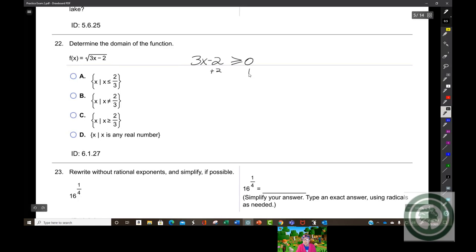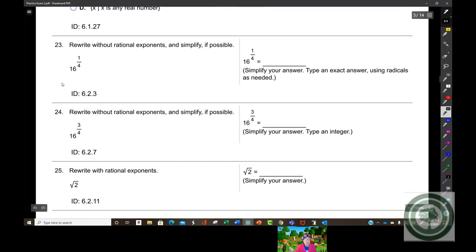Plus 2, plus 2. 3x is greater than or equal to 2. Divide by 3, divide by 3. X is greater than or equal to 2 thirds. So there you go.